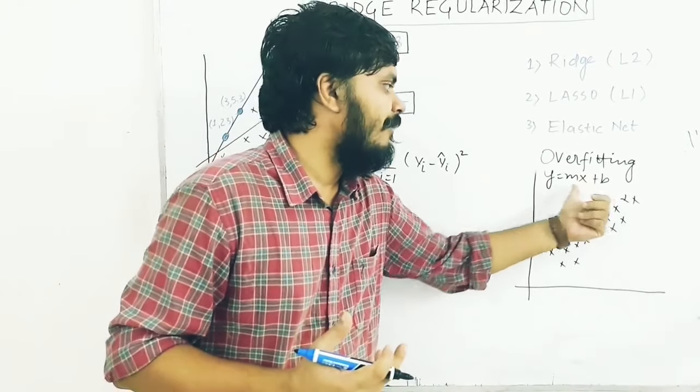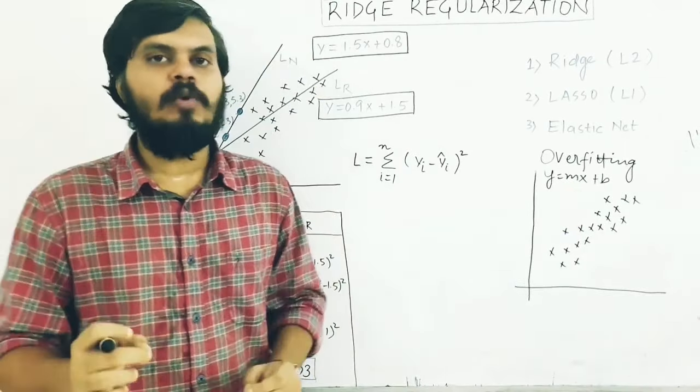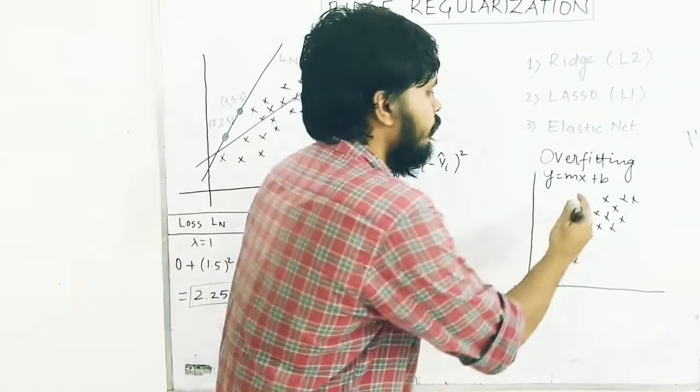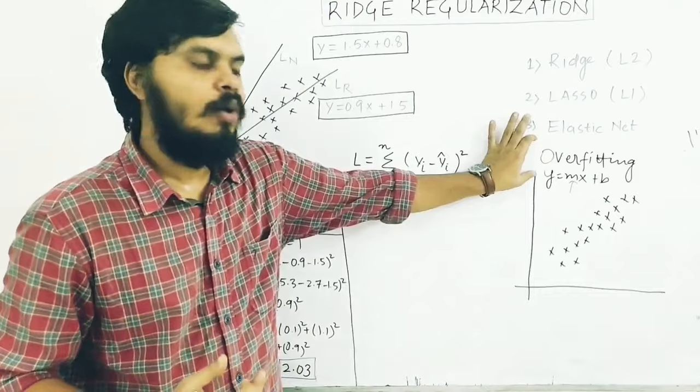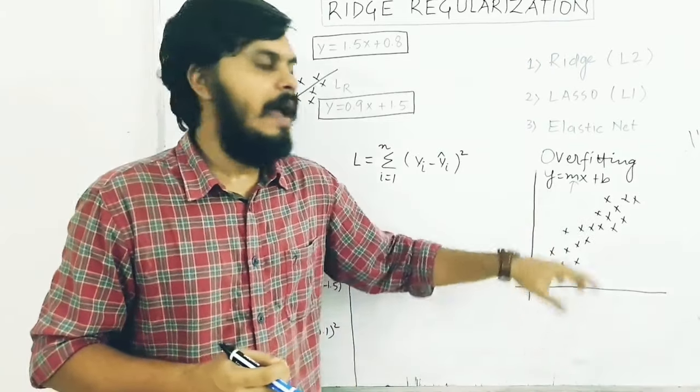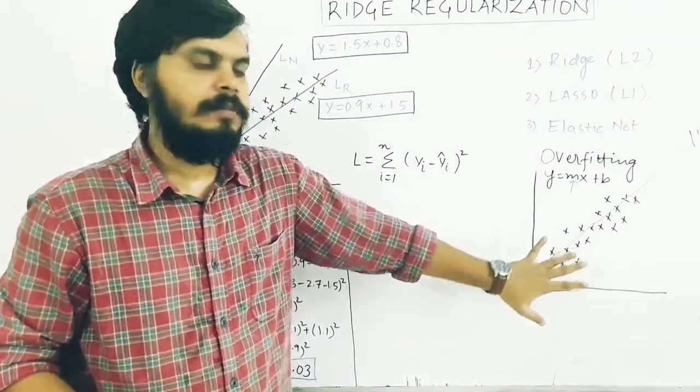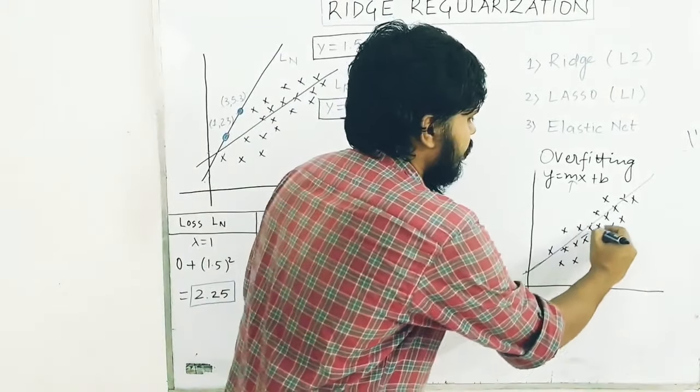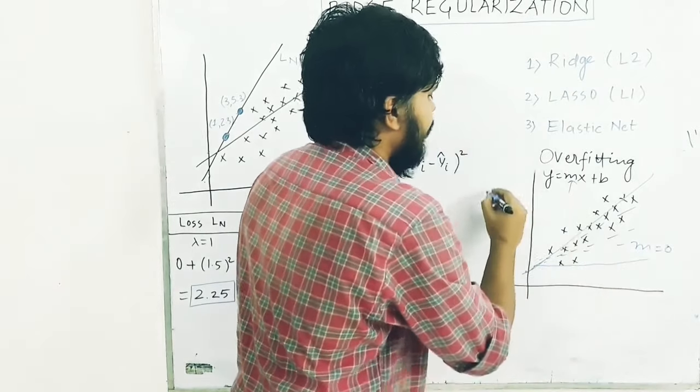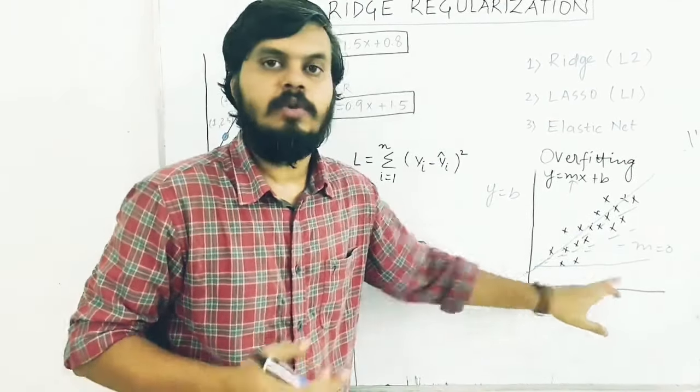When you see an overfitted model or line segment, m will have a very high value. If you talk about overfitting in linear regression terms, it means the slope value is extremely high. And if this value is very low, then it is underfitting. If the slope keeps decreasing, eventually you will reach a point where m would be zero, meaning y would be simply b, independent of x. This is underfitting.